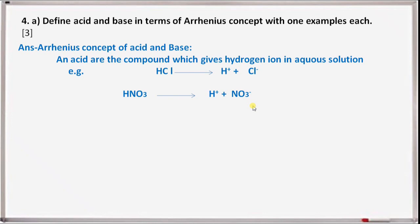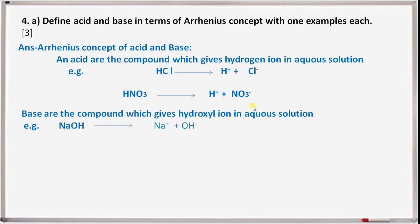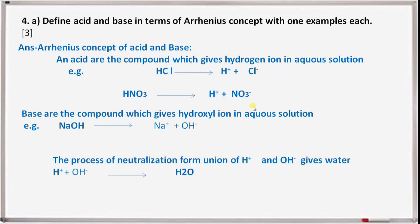Next question 4a: define acid and base in terms of the Arrhenius concept with one example. Arrhenius concept: acids are compounds which give hydrogen ions in aqueous solution. For example, HCl gives H⁺ + Cl⁻; HNO3 gives H⁺ + NO3⁻. Bases are compounds which give hydroxyl ions in aqueous solution. For example, NaOH gives Na⁺ + OH⁻. In neutralization, H⁺ + OH⁻ gives H2O.